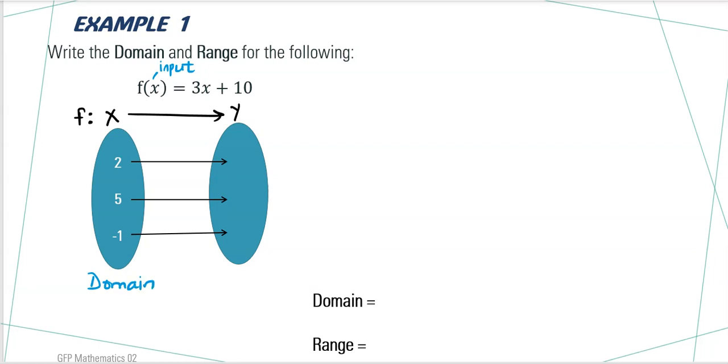Now, we need to find the range. Range means the elements to which 2, 5 and minus 1 is mapped through this function.